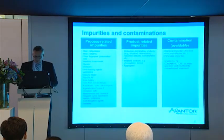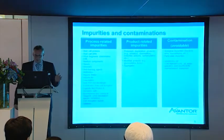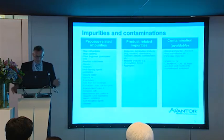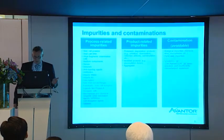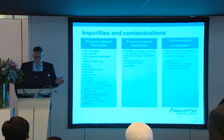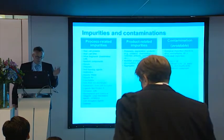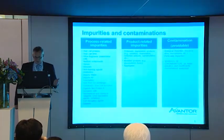Besides process- and product-related impurities, we also have to deal with contamination — contamination coming from the materials themselves, but also from packaging or from the manufacturing process, such as from vessels. Especially when you produce with single-use equipment, this is a very important topic that you have to control.